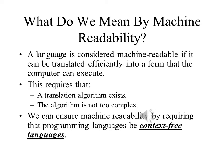Machine readability requires that we have the means to translate it into the computer's own native language, and that requires a translation algorithm that is simple enough to run efficiently on contemporary computers. It is for this reason that we usually use context-free languages, because their grammatical structure is simple enough for easy automated translation, but complex enough to contain the features that we need to write useful programs.